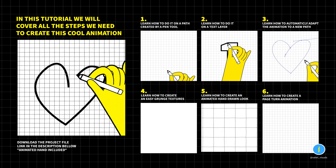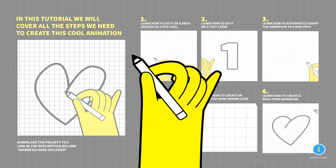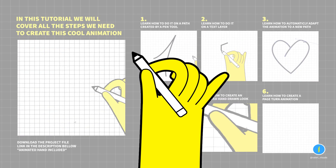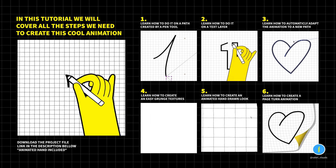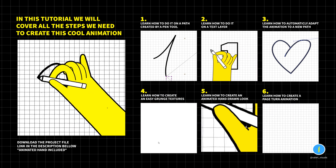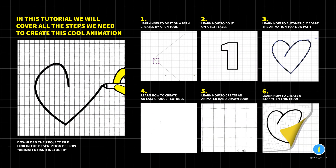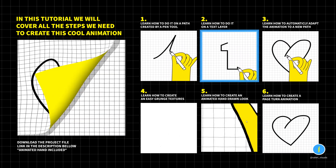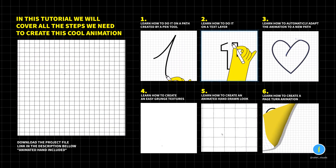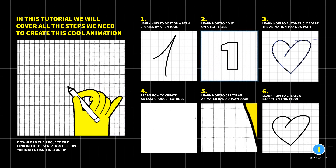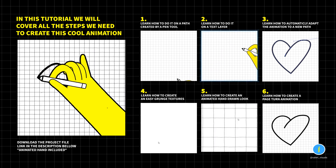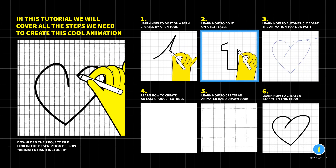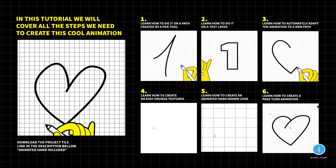For example, you can download this project file with a cool animated hand holding a pencil that I created for you guys, or you can create a pencil by yourself. Don't worry, I will show you how to create it in case you don't want to use my animated hand. Number two, I will show you how to do the exact same thing, but this time we're going to create a path from a text layer, in case you want to create this animation on a specific font that you like.